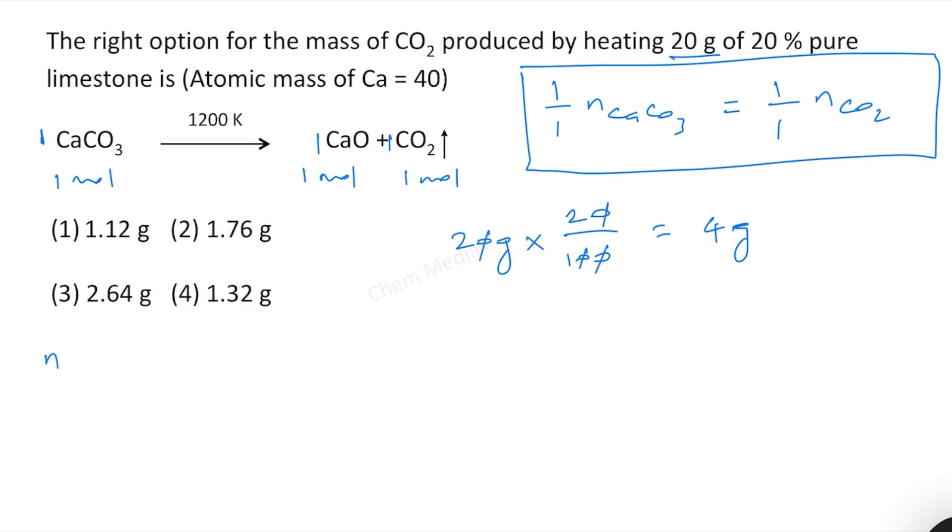Let us find the molar mass of calcium carbonate. For calcium 40, for carbon 12, 3 times oxygen 3 times 16, so 48. And therefore this is 100 grams per mole.